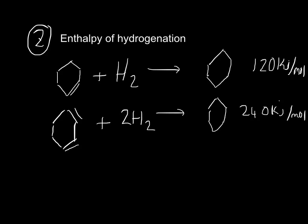The second reason is enthalpy of hydrogenation. Cyclohexene plus hydrogen goes to cyclohexane, with an enthalpy change of 120 kJ per mole. Cyclohex-1,3-diene plus two hydrogens goes to cyclohexane, with an enthalpy change of 240 kJ per mole.